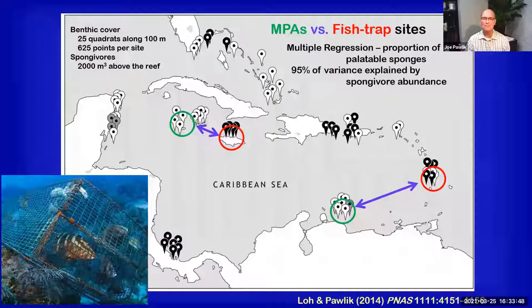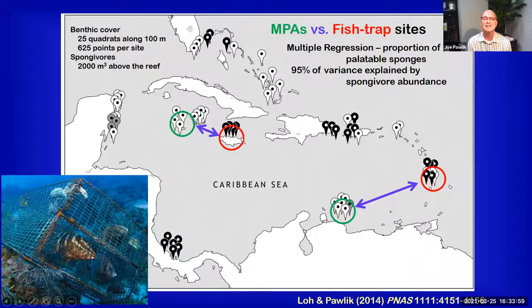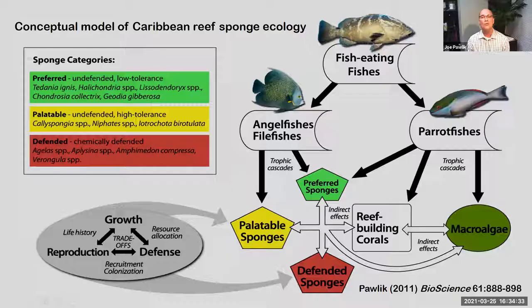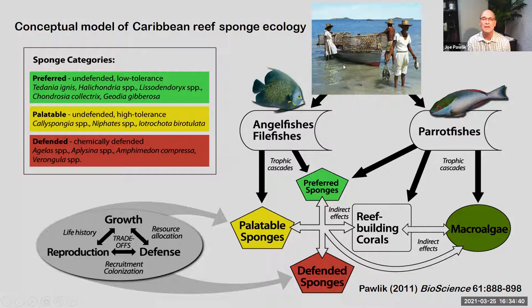In places where the fishes had been completely stripped from the reef and spongivore totals were relatively low, there was a much higher proportion of palatable sponge species present in the sponge community. Comparing adjacent locations — marine protected areas versus fish trap sites — 95% of the variance could be explained by spongivore abundance alone. In fact, we could say each individual angelfish reduces the proportion of palatable sponges by 8.6%. A very clear effect of spongivorous fishes on the sponge community, very much unlike the concept that these animals are not influencing the sponges at all.